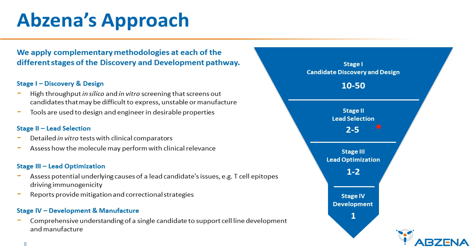All the while we are reducing the number of drug candidates as we go through this attrition process, and by the time we get to stage four, we have a comprehensive understanding of a single or a couple of candidates to take to cell line development and manufacture.